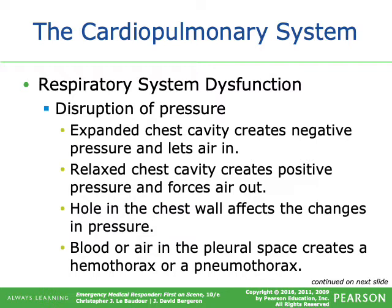Blood or air in the pleural space creates a hemothorax or pneumothorax. Hemo refers to blood and thorax refers to chest — so hemothorax is blood in the chest cavity, specifically between the parietal and visceral pleura. Pneumo refers to air, so pneumothorax is air trapped between the visceral and parietal pleura of the lungs.